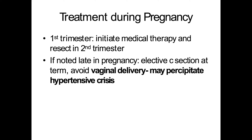Pheochromocytoma during pregnancy: generally if it's in the first trimester, start with medical therapy and let the baby get into the second trimester before initiating resection. If not detected until late in pregnancy, they may do an elective C-section at term to avoid the catecholamine exacerbation with vaginal delivery, which would precipitate hypertensive crisis.